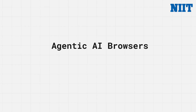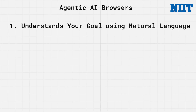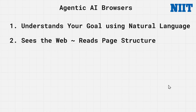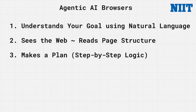So how does this work in theory? First, it understands your goal — you give it a plain English command like 'plan a trip for me,' and a powerful large language model figures out what you actually want to achieve. Second, it sees the web — the AI can read the code and structure of any web page. It knows what's a button, what's a link, what's a price, and where to type.